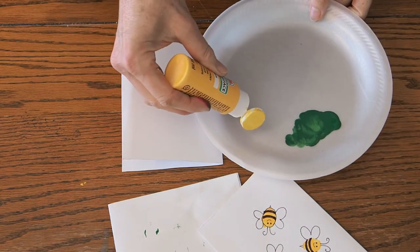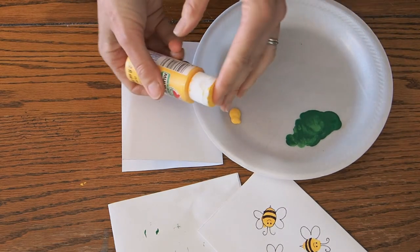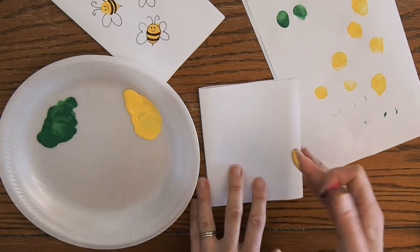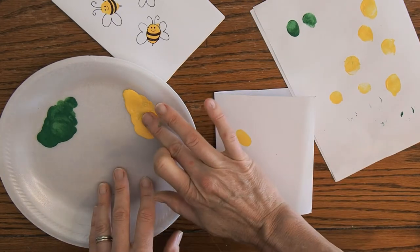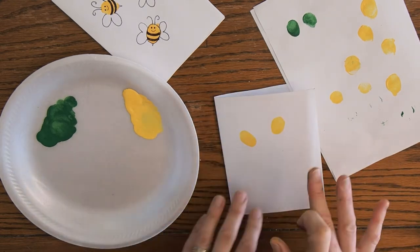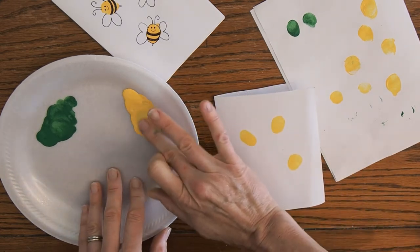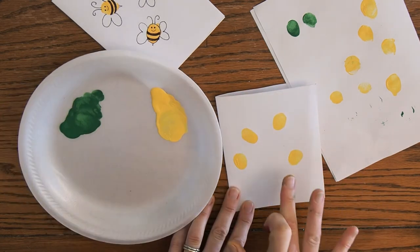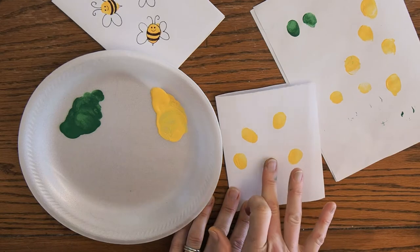Moving on to making our bumblebee card. We're just going to get some yellow paint and do the same thing. Rub our finger around in there. You see I did some tests with that. I'm going to use my middle finger to make our bumblebees. So we're just going to put as many as we want on that card. This card is going to open to the side. And so I'm going to put five little bumblebees on there.